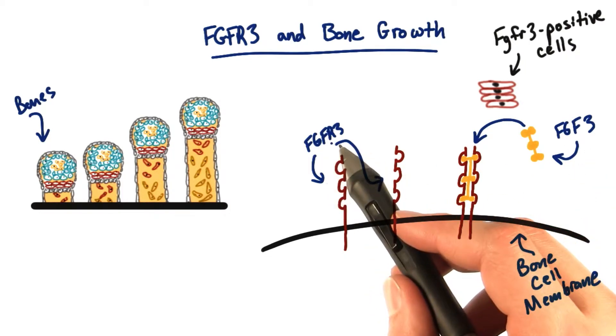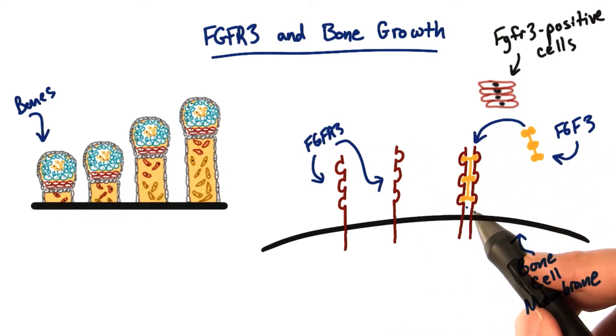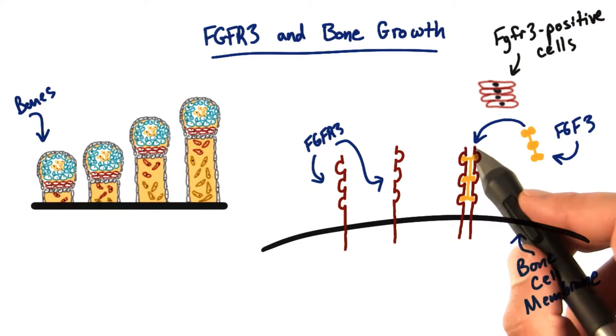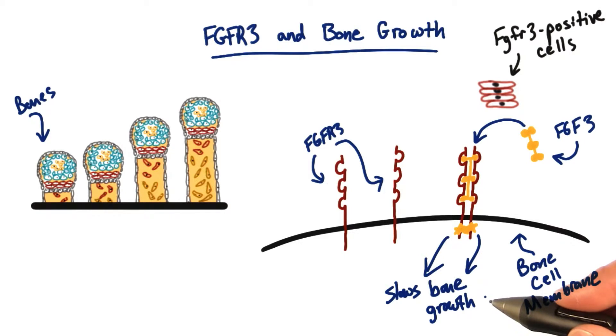The R in FGFR3 stands for receptor because it receives the signal from FGF3. It's serving as a docking platform so these two FGFR3 proteins can get close together. Once they're close together, there's a signal sent to slow down bone growth.